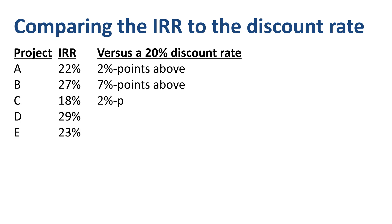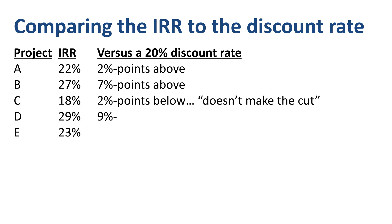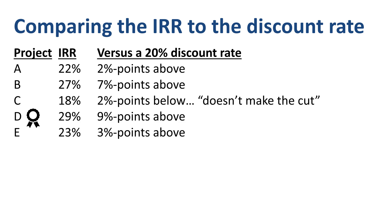Project C is 2 percentage points below the discount rate and doesn't make the cut. Project D is 9 percentage points above the discount rate, and Project E is 3 percentage points above the discount rate. The higher the IRR, the more attractive the project, so out of this list, Project D is the winner.